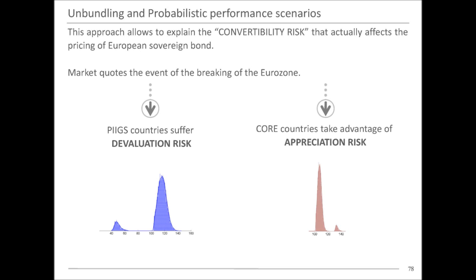For Italy, the probability distribution shows that the negative-return scenario corresponds not to a standard default where you receive 40 euros back, but to a redenomination event where Italy exits the euro, creates a new lira at a one-to-one exchange rate, the forex market devalues the lira, and you receive less money. This is not a deterministic analysis — it is probabilistic — but it is the decomposition of what financial markets were pricing through the spread and the negative rate.